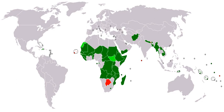Kofi Annan, former Secretary General of the United Nations, defined a developed country as one that allows all its citizens to enjoy a free and healthy life in a safe environment. Development can be measured by economic or human factors. Developing countries are, in general, countries that have not achieved a significant degree of industrialization relative to their populations, and have, in most cases, a medium to low standard of living. There is an association between low-income and high-population growth. The development of a country is measured with statistical indexes such as income per capita, gross domestic product per capita, life expectancy, the rate of literacy, freedom index and others.